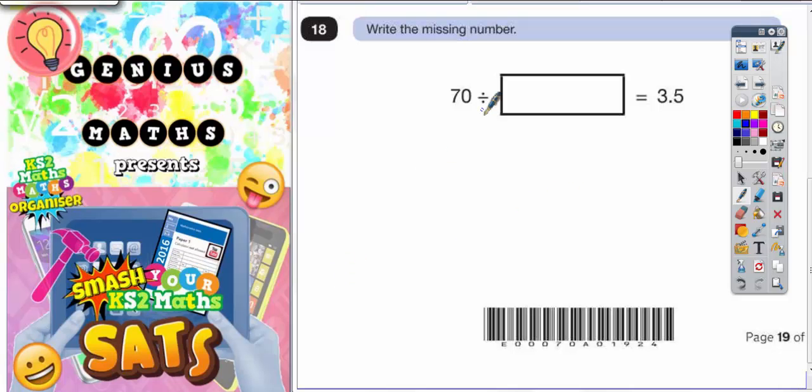So before we begin looking at this question, I'm going to ask you to think about this. What is 100 divided by 50? Well, obviously the answer to that is 2. Now, instead of dividing by 50, let's think about dividing by a number which is 10 times smaller than 50. Well, 10 times smaller than 50 is 5.